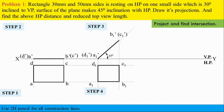Step three carries two marks and step four carries approximately three marks — steps one through four contain eleven marks total. If there is an error in step three, steps four, five, and six will also be wrong. Please be careful while drawing the diagram.